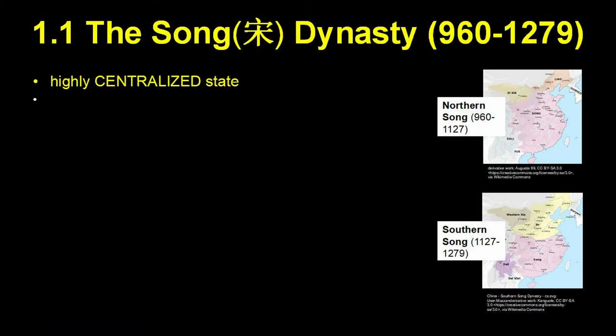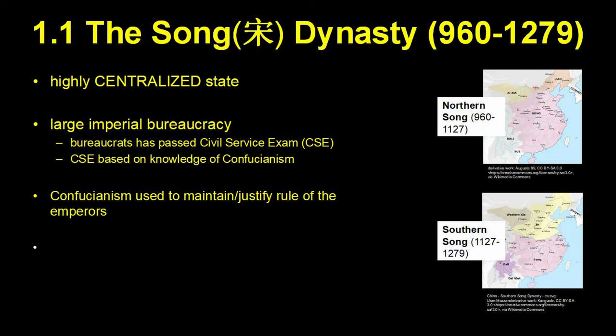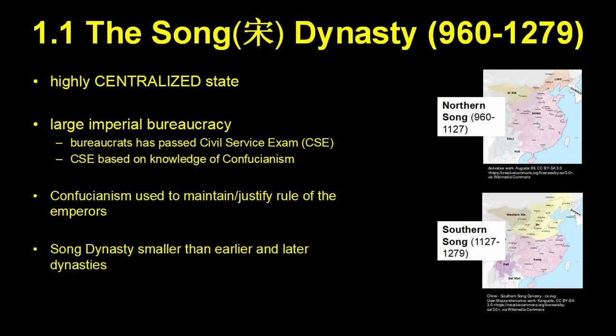1.1 has the Song Dynasty. Like the Chinese dynasties that came before, it is a highly centralized state with a large imperial bureaucracy. The bureaucrats who work for this bureaucracy are scholars who have passed the civil service examination, which is largely based on knowledge of Confucianism. The government also uses Confucian ideas of strict hierarchies and obedience to authority to justify its imperial rule. The Song Dynasty has also lost significant territory to rival states such as the Jin Dynasty and the Western Xia, which are led by nomadic or semi-nomadic peoples.